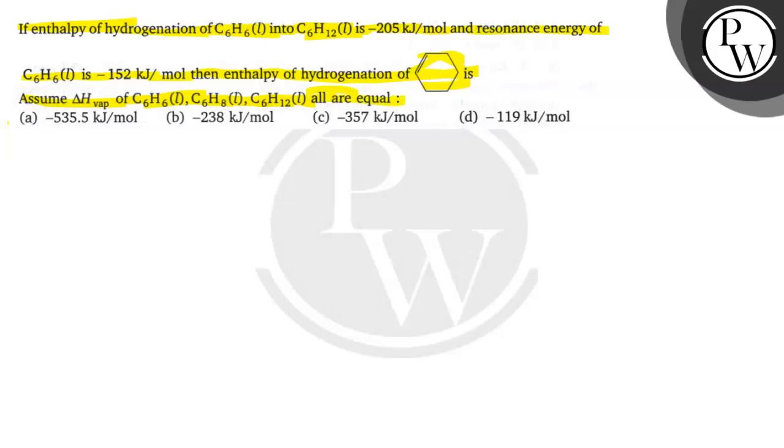This question asks what the enthalpy of hydrogenation of benzene is, and we need to find the enthalpy of hydrogenation of cyclohexane. There are four options. We need to select one correct option after solving.